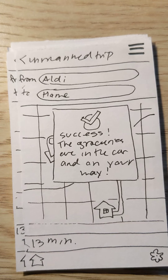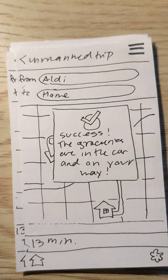For my critique question, I'm curious what I can do to make this process a little more streamlined. It feels like a lot of pages right now, so I'm wondering if there's a way to consolidate a lot of these into fewer pages to make it a little easier for the user.